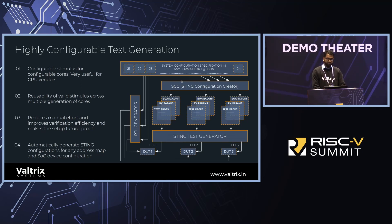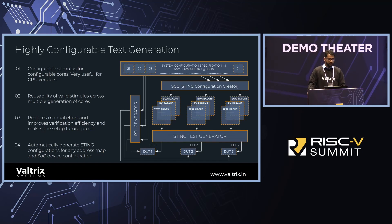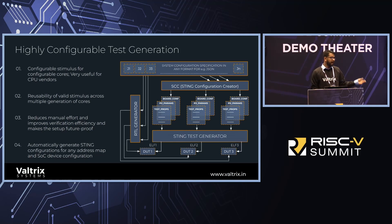When you have a large number of configurations, it becomes tedious to maintain different input sources. So we created another utility called the Sting Configuration Creator, or SCC, which derives from a single input configuration source — a JSON format or any other format used to generate your cores, RTL, or model. Sting tests can also be generated from the same source, producing parameters like your DUT specification, board configuration, RAM locations, driver locations, and test properties. This reduces manual effort, improves verification efficiency, and makes it future-proof and scalable.